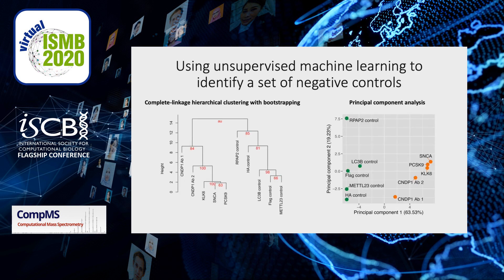From the collection of antibodies used for negative controls, we wanted to identify a subset which reproducibly captured nonspecifically binding proteins in the human plasma samples that we could later use for computational modeling. To do this, we ran a hierarchical clustering analysis with bootstrapping and principal component analysis. This allowed us to evaluate the similarity between experiments and the variance within the dataset, respectively.